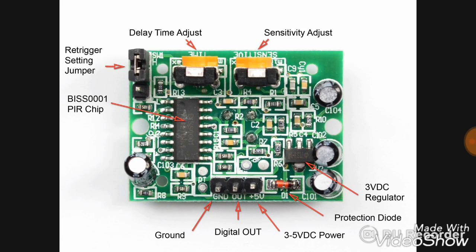This is a PIR sensor, means passive infrared sensor. It can be used to sense physical motion, meaning we can use it to sense human motion. It can also be used in security systems. The sensor contains two knobs — one for time delay and the second for sensitivity adjustment.